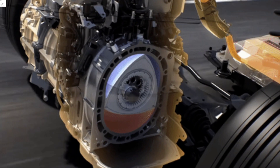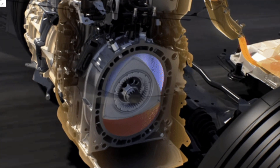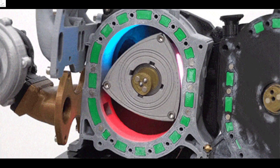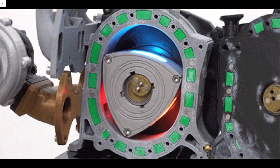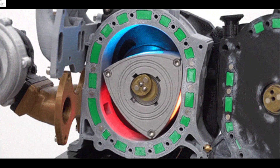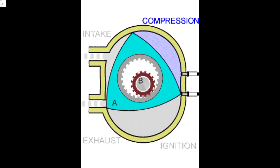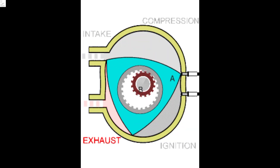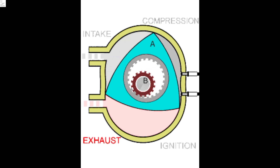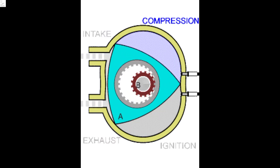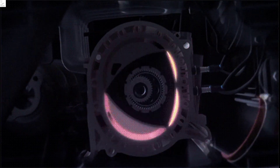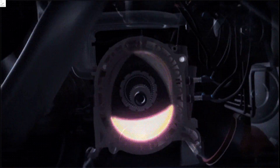4. Rotary engine: also known as a Wankel engine, the rotary engine is a type of internal combustion engine. It uses a rotor instead of reciprocating pistons to convert pressure into rotating motion. The rotor moves in a circular path within an oval-shaped housing, creating power through the combustion process. Rotary engines are known for their high revving characteristics and compact size.